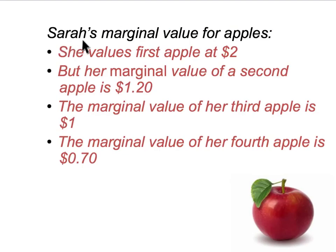We're looking at the example of Sarah and her marginal value for apples. Sarah values her first apple at $2, so the marginal value of apple number one for Sarah is $2. Her marginal value for a second apple — that is, the most she's willing to pay for a second apple given she has the first — is $1.20. Her marginal value of the third apple is $1, and the marginal value of her fourth apple is $0.70.